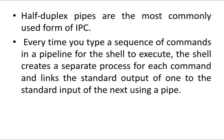Half-duplex pipes are the most commonly used form of IPC. When you type a command in a pipeline, the shell creates a separate process for each command. Because the pipe is half-duplex, you have to create separate pipes for sending and receiving data — one for reading and one for writing.